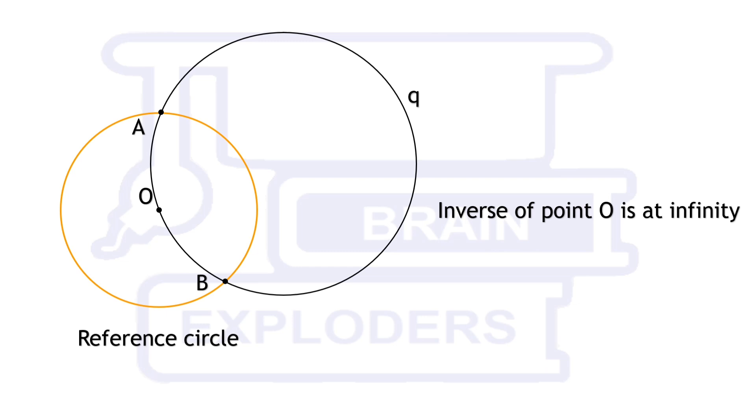We know that inverse of a circle is another circle. These two properties tell us that inverse of Q is a circle of infinite radius, that means a line.